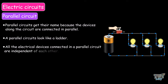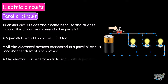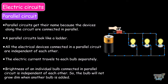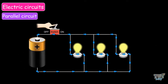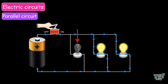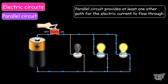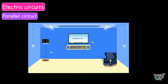All the electrical devices connected in a parallel circuit are independent of each other. The electric current travels to each bulb separately. The brightness of an individual bulb connected in parallel is independent of the others, so a bulb will not grow dim when another bulb is added. In a parallel circuit, if one bulb breaks or burns out, the other bulbs will remain lit, because a parallel circuit provides at least one other path for the electric current to flow through. Think of all the tube lights in your home — if one tube light burns out, the other tube lights will still work because they are connected in parallel.